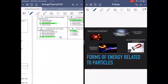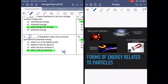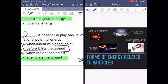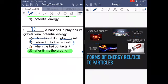And the other one that was kind of confusing and I want you to understand is number nine of the last page. It says a baseball in play has its lowest gravitational potential energy. Some of you answered before it hits the ground, that also sounds kind of obvious, but the correct answer would be after it hits the ground. And that would be it for right now, okay guys.